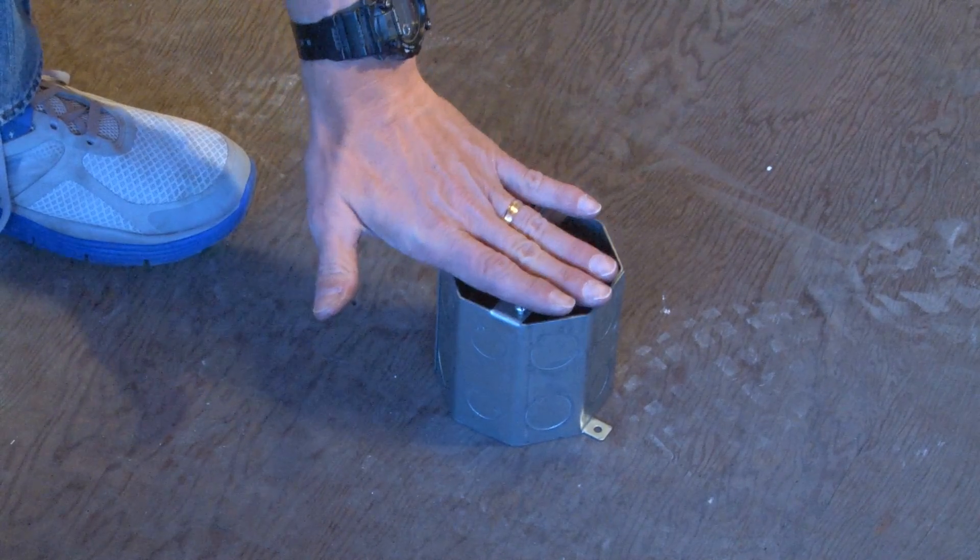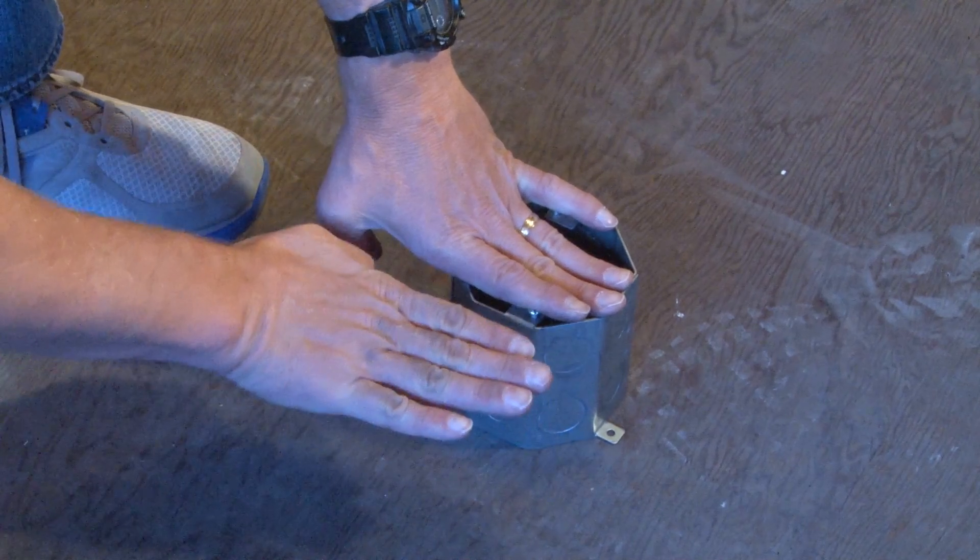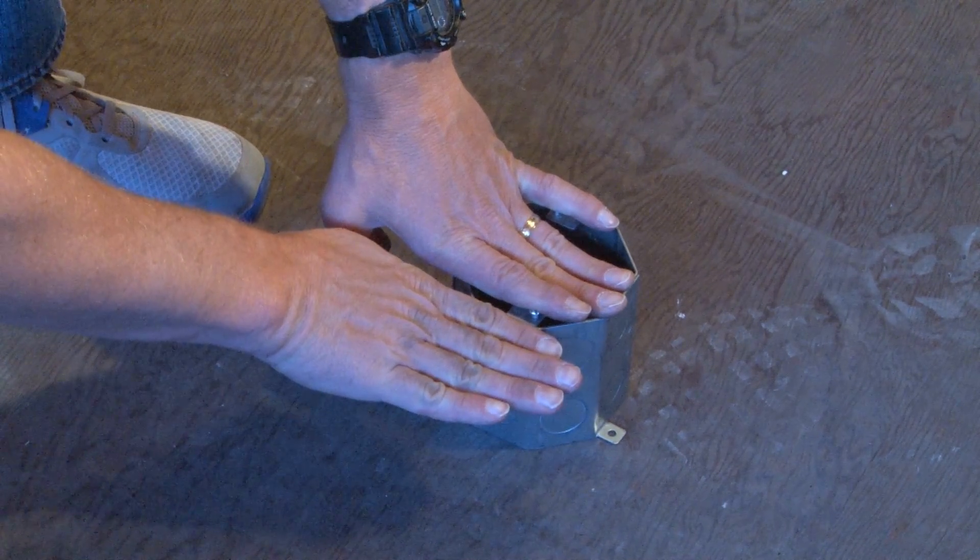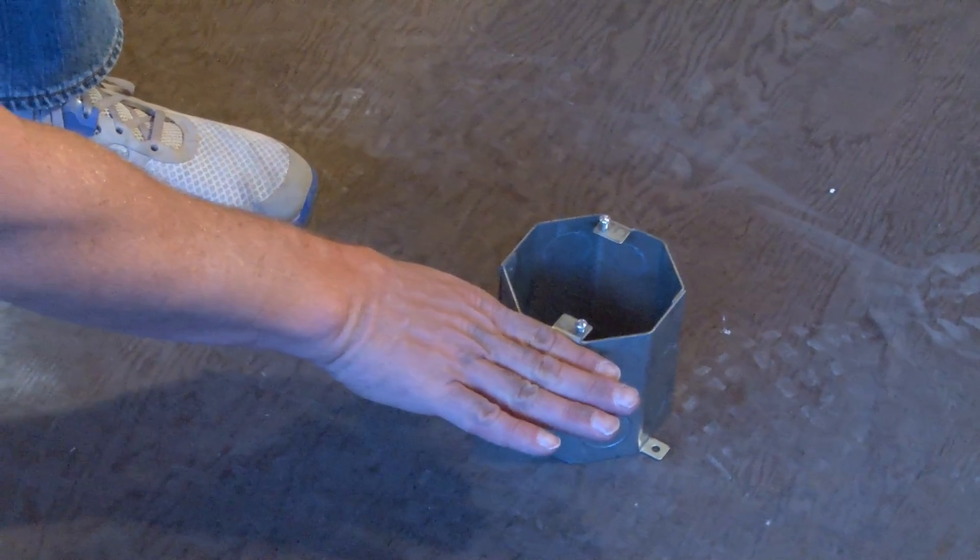Once a blank cover is put on, we're ready for the concrete pour. They pour the concrete that encases the box and the conduit, strip the form, take off the cover, and you can start wiring the box.